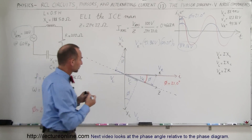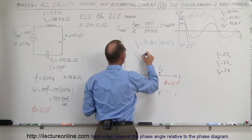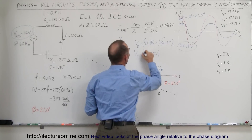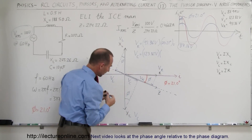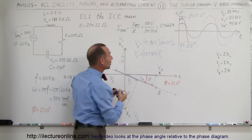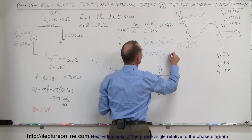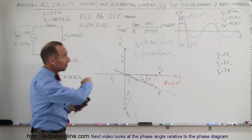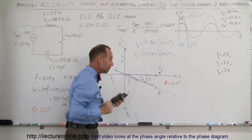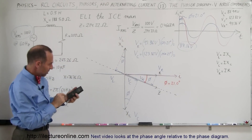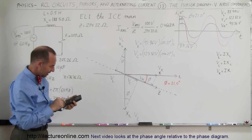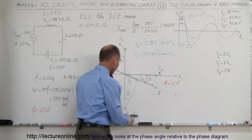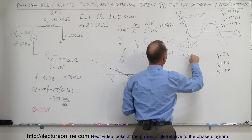Now let's do it for the capacitor. The voltage across the capacitor equals the RMS voltage of 123.82 volts. Now we have to be careful here — it's the opposite side to the angle, so it's going to be the sine of 21 degrees. So 123.82 times sine of 21 degrees gives us 44.36 volts. That is the momentary voltage across the capacitor at that moment in time — remember, the voltage changes with time.